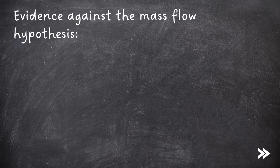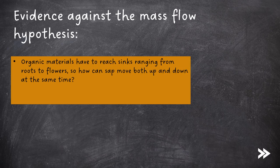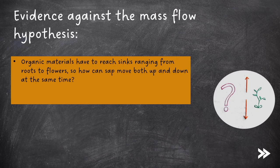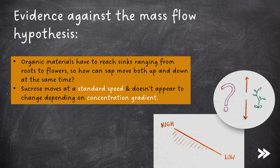However, there is also some evidence against the mass flow hypothesis. For example, organic materials must reach sinks ranging from the roots to the flowers, so it is unclear how sap can move both up and down a plant at the same time. Also, sucrose moves at a standard speed that does not appear to change depending on the concentration gradient.